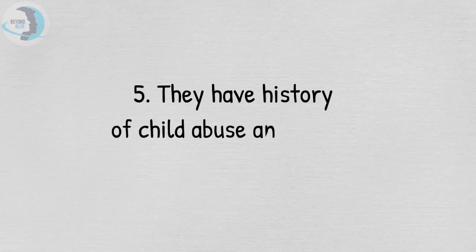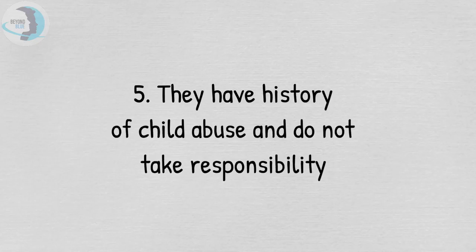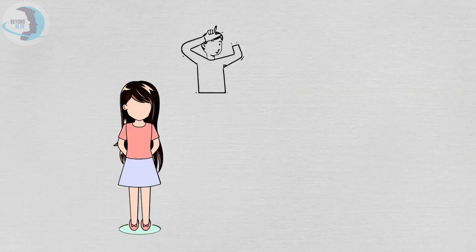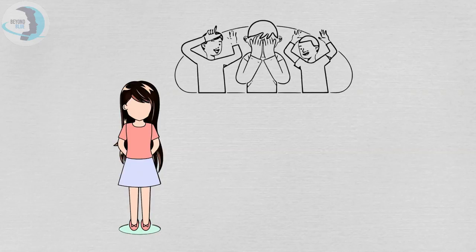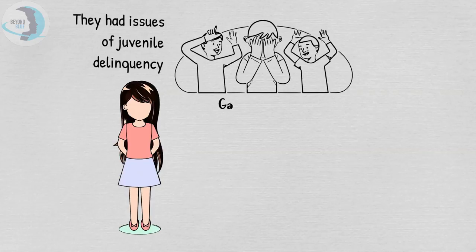Number five: they have a history of child abuse and do not take responsibility. At some point we don't have to blame the psychopath for his behavior, because if it's traced back to their childhood days, it's found that most of them were abused during those days and they had issues of juvenile delinquency.